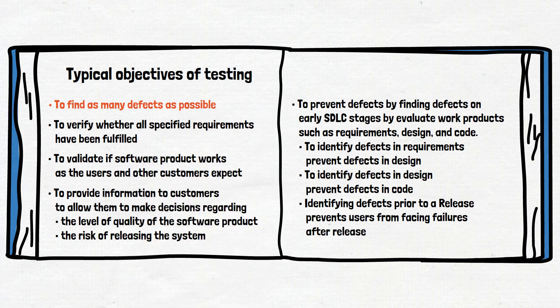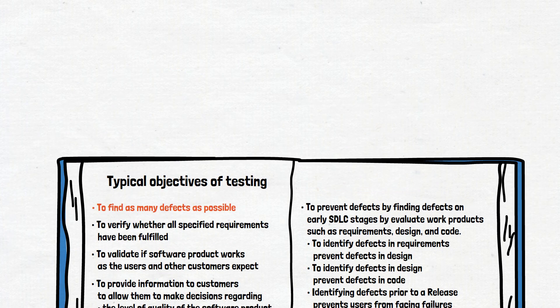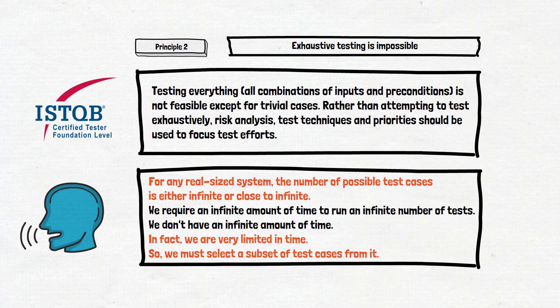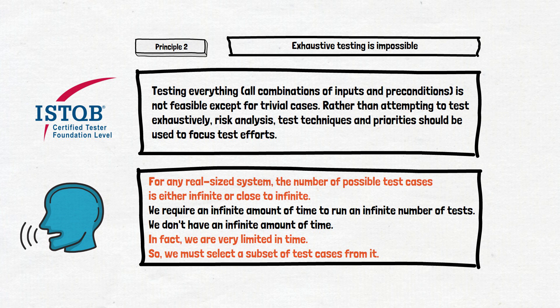In one of our previous videos we discussed the typical objectives of testing and highlighted that the main objective is to find as many defects as possible. You can pause the video and read those if you forgot. Another thing we already discussed are the seven testing principles, and one of the principles was: exhaustive testing is impossible.